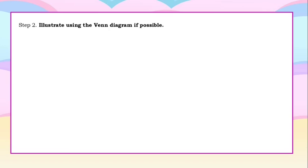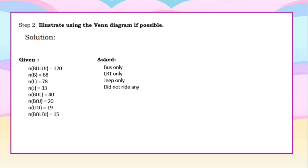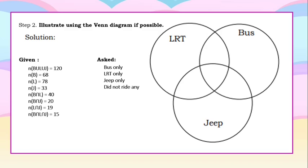For our second step, we have to illustrate using the Venn diagram if possible. The upper left circle is for students who rode the LRT, the upper right circle is for students who rode the bus, and the lower circle is for students who rode the Jeep. My tip: we start with the given fact with the most number of intersections — the cardinality of set B intersect set L intersect set J equals 15 — and put it in the innermost part of the Venn diagram.